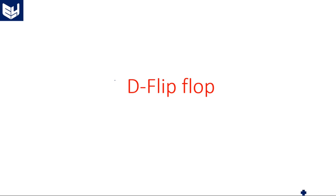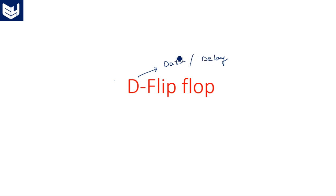In this video I am going to explain about the D flip-flop. D stands for data flip-flop or delay flip-flop. Generally a flip-flop is used to store one bit of information, and this data flip-flop or delay flip-flop is used to store either 1 or 0. Whatever we give at the input, the same will be stored in the output.